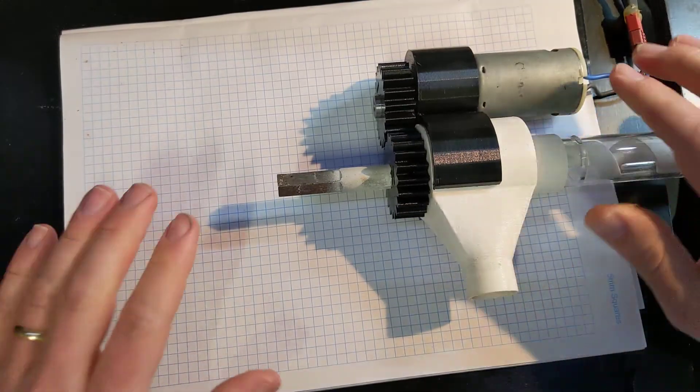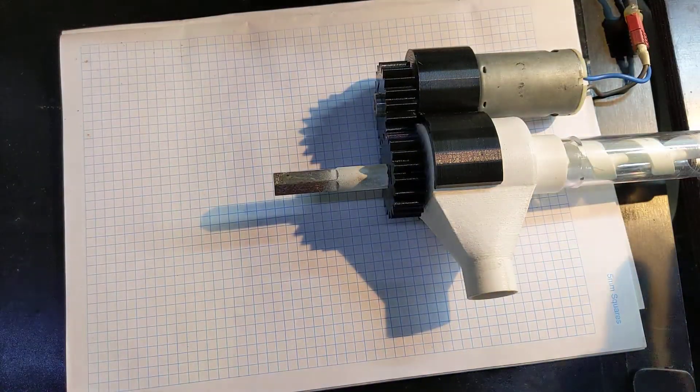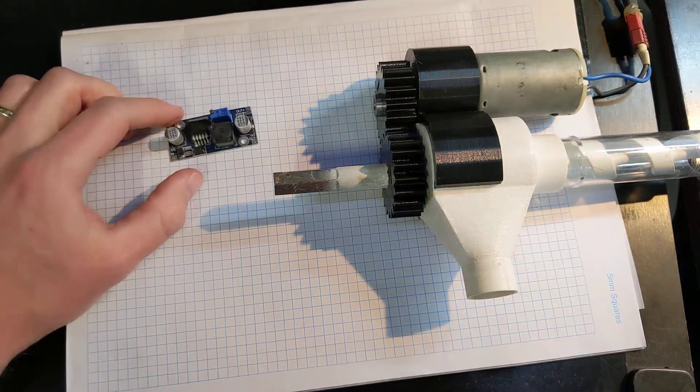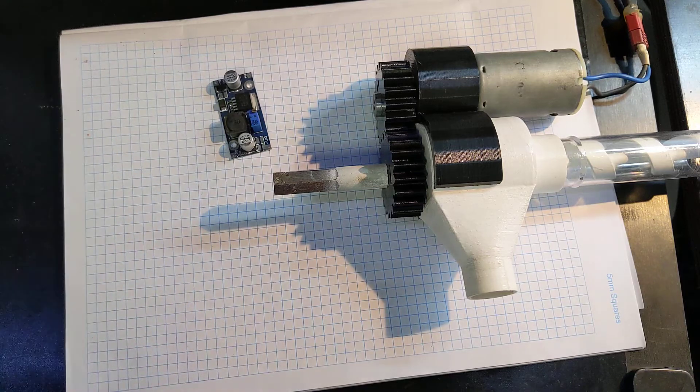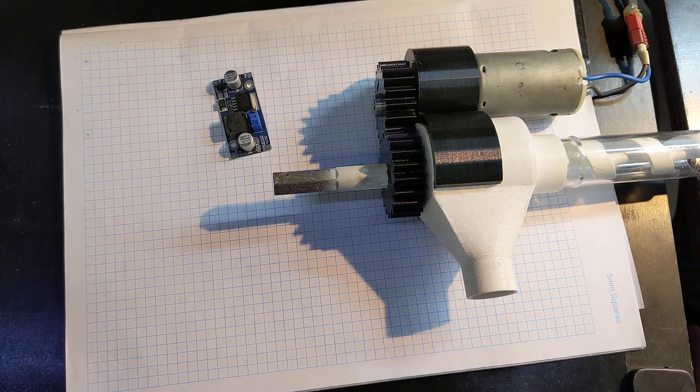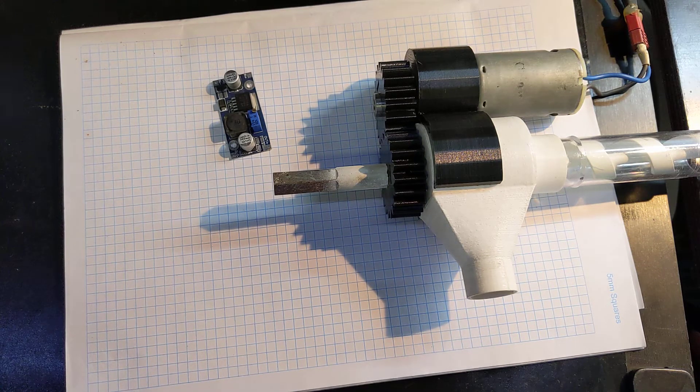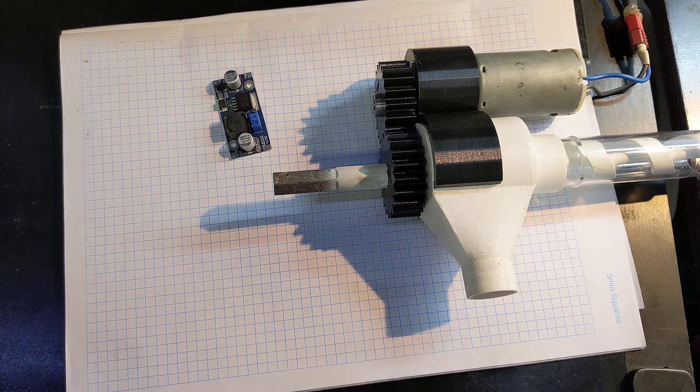So the goal for powering this is to have one of these little adjustable switch mode voltage regulators and three 18650 cells in series. Should work pretty well.